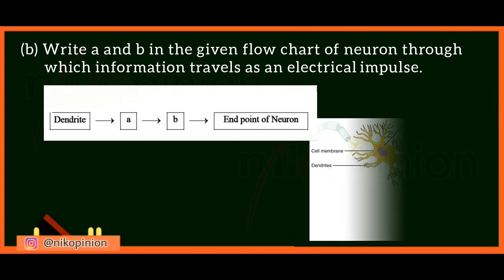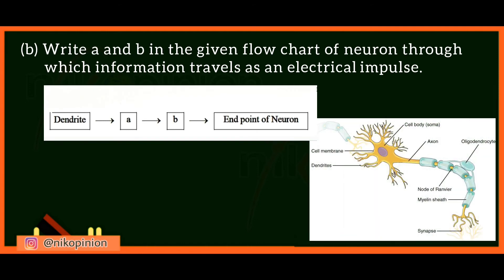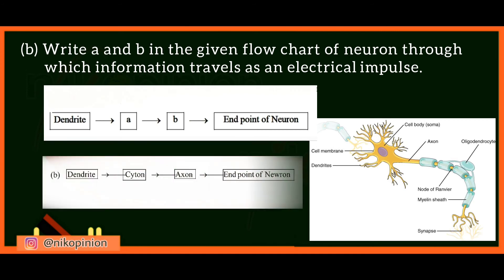As you can see here, this is the nerve cell. The dendrites part is the starting point of the nerve cell, and this is the cell body which contains cytoplasm. It is completely known as cyton. That's why we are writing cyton in the first fill-up. And the next fill-up, the path which connects the cyton with the end point of the neuron is the line-wise structure. It is the axon.